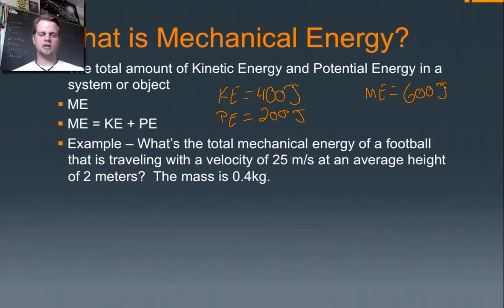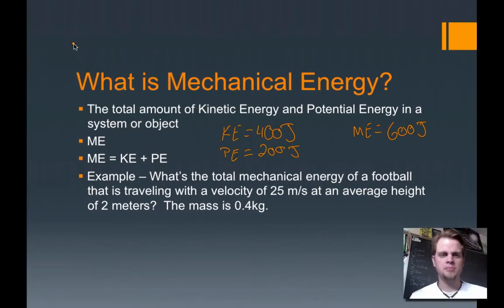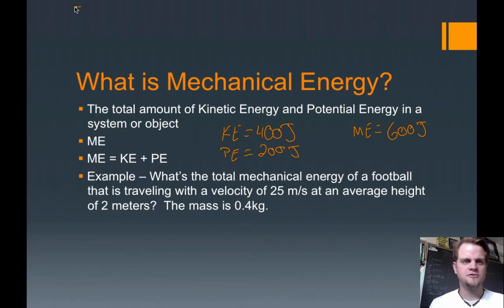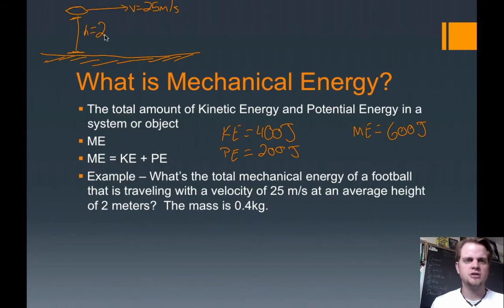The example down here is a little bit closer to what I would say. So what's the total mechanical energy of a football that is traveling with a velocity of 25 meters per second at an average height of 2 meters? The mass is 0.4 kilograms. Now I'm going to draw a picture again. So I'm going to imagine this football, and it's traveling with a velocity of 25 meters per second. It has an average height above the ground of 2 meters.